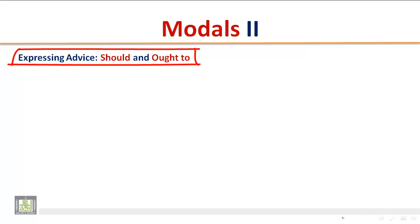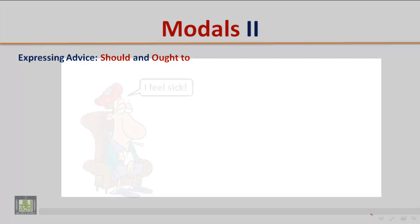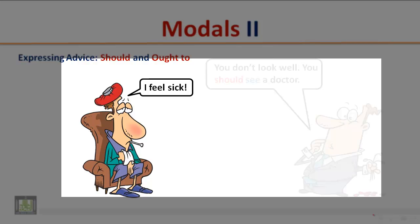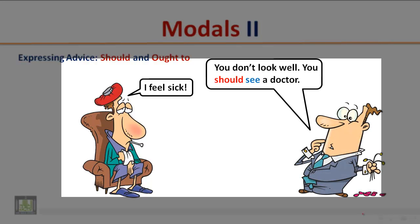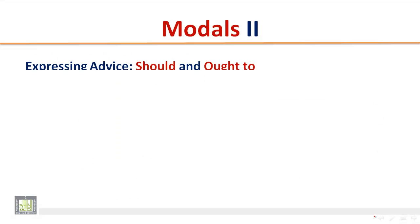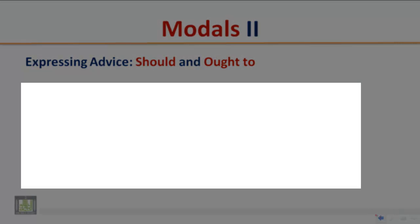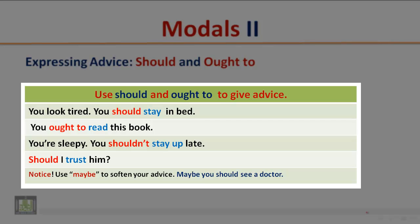Expressing advice: 'should' and 'ought to.' Listen to the following short conversation and pay attention to the modal auxiliary. I feel sick. Oh, you don't look well — you should see a doctor. Use 'should' and 'ought to' to give advice. Examples: You look tired, you should stay in bed. You ought to read this book. You're sleepy, you shouldn't stay up late. Should I trust him? Notice that the modal auxiliary in these examples is used to give advice.